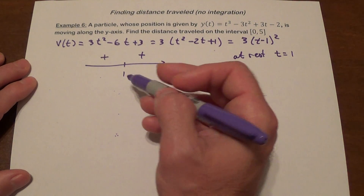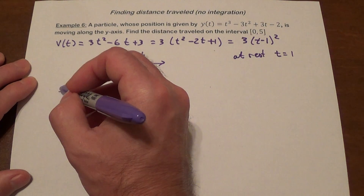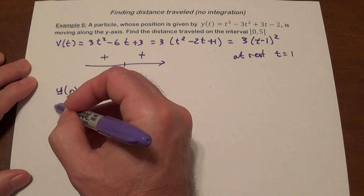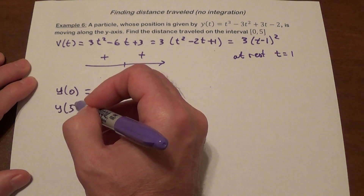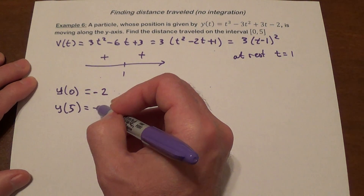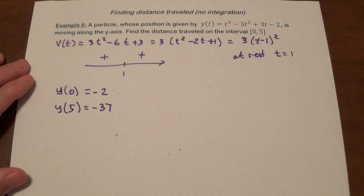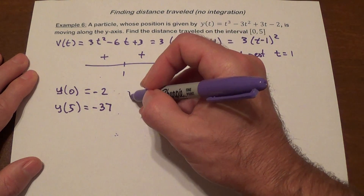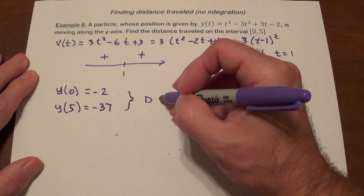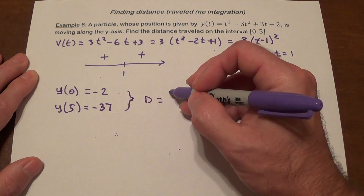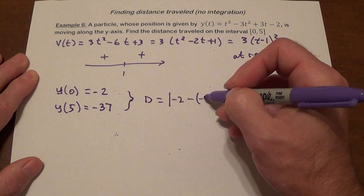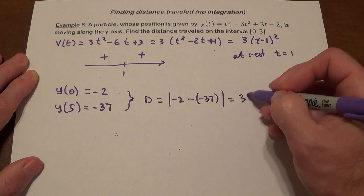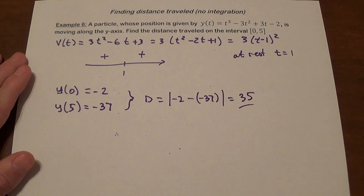Since there is no direction change, we only consider the endpoints. y(0) = -2 and y(5) = -37. The distance between these two points, which is also the total distance traveled, is |-2 - (-37)| = 35.